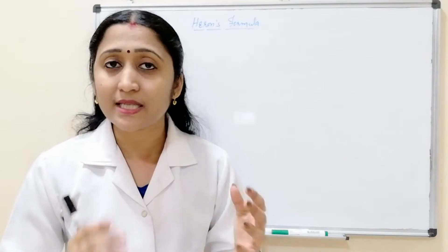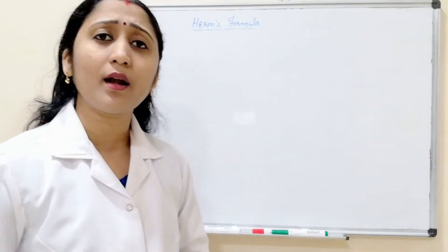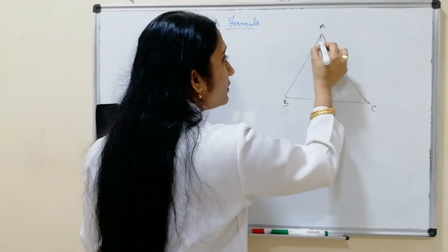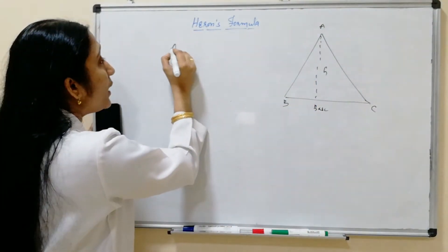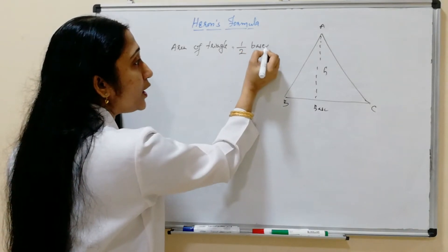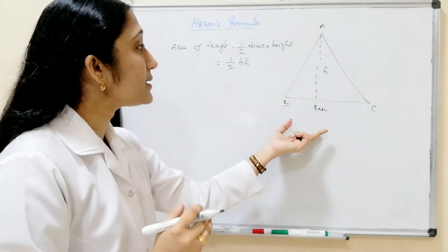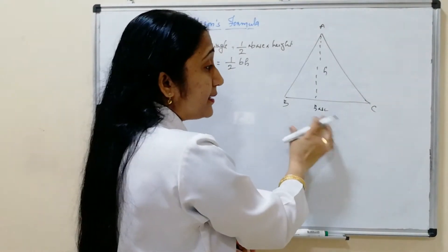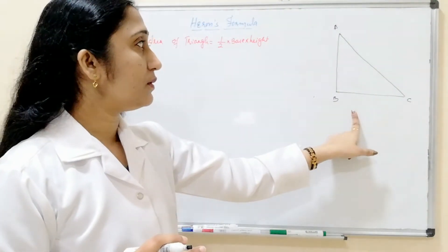Let us see what are the basic formulas. What is the area of a triangle? This is the triangle. This is the base and this is the height — the perpendicular drawn from A to the base is called the height. So the area of a triangle is nothing but half into base into height, or simply half BH, where B is the base and H is the height.